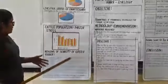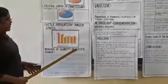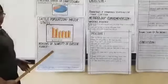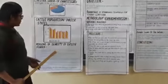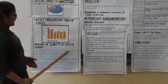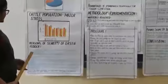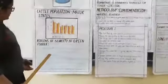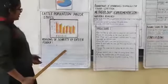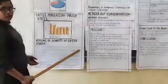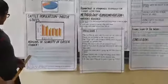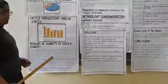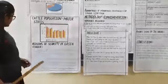What are the reasons of scarcity of green fodder? First is rapid urbanization causing decrease of land available for grazing and fodder cultivation. The farmers prefer to cultivate commercial and food crops. Third, there is the scarcity of water for irrigation.